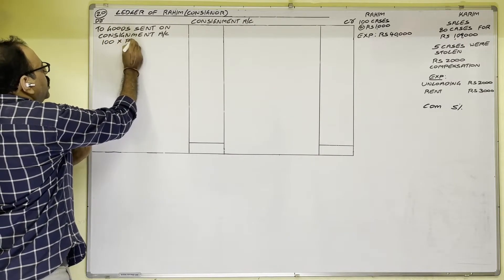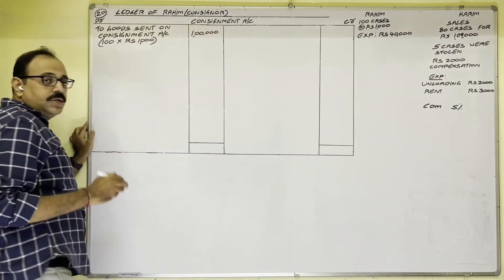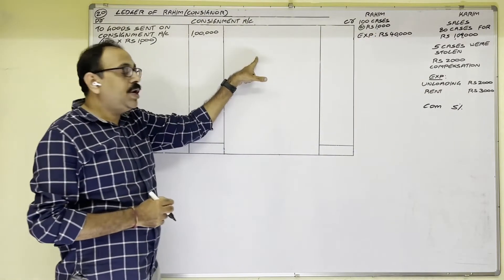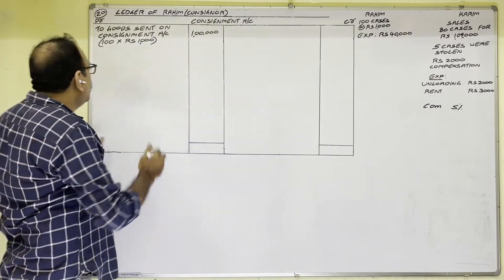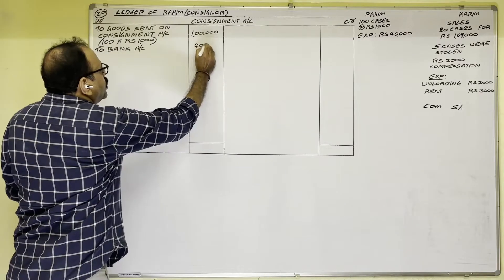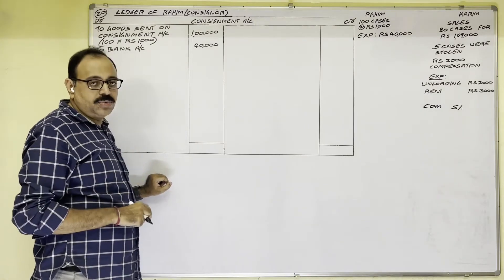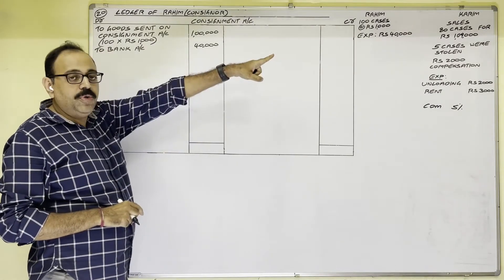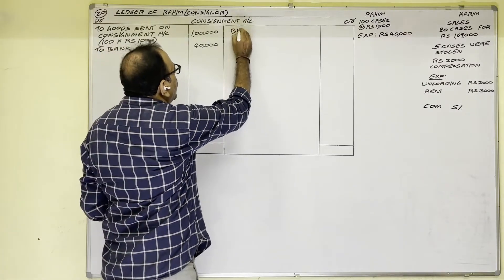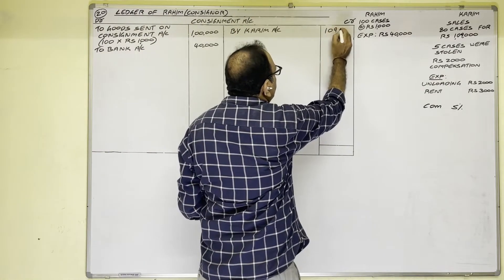100 cases at ₹1,000 each equals ₹1,00,000. Next, to send these goods, the consignor incurred expenditure of ₹40,000. Entry: Consignment Account debit, to Bank Account — post ₹40,000 on the debit side. Next, for sales: Karim Account debit, to Consignment Account. On the credit side of the consignment account, post 'By Karim Account' — 80 cases sold for ₹1,09,000.